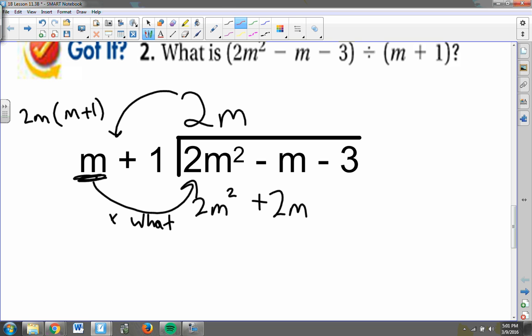And now I will subtract. 2m squared minus 2m squared is gone. Negative m minus 2 more m's is negative 3m. And now I am going to bring down this negative 3.